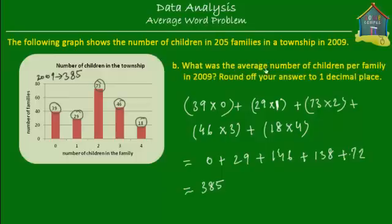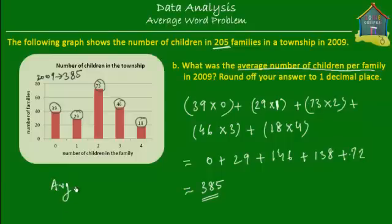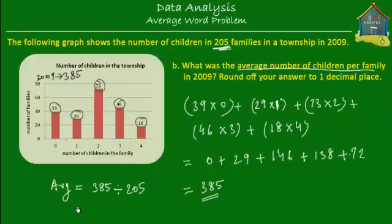The next question is: what was the average number of children per family in 2009? Now we know that there were 205 families and a total of 385 children. The formula for average is: average equals the total of all the items. The total of all the items is 385 children, divided by the total number of families, which was 205. So let's use a calculator again.